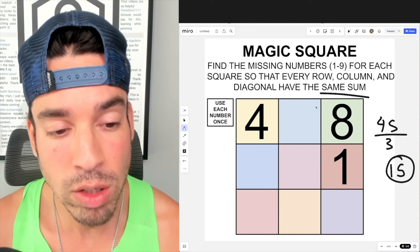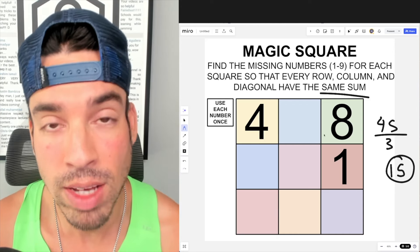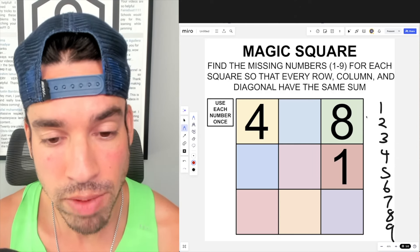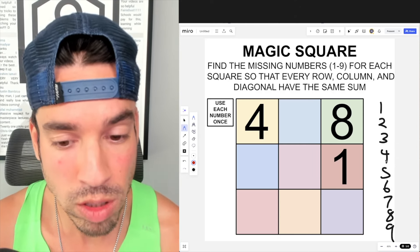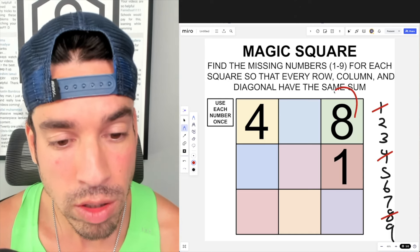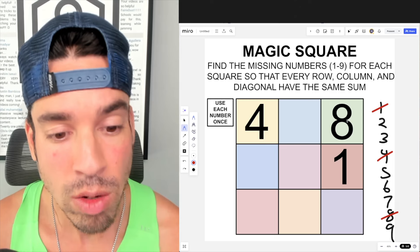Okay, so now that we know that every row or column or whatever have to add up to 15, this gives us a really good jumping off point. So here are the numbers that are available to us and everything is being used once, so we can already eliminate four, eight, and one.